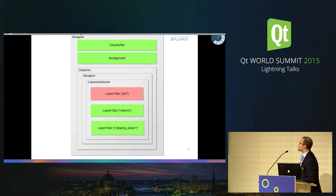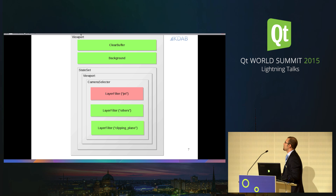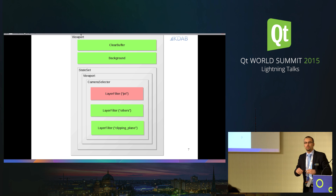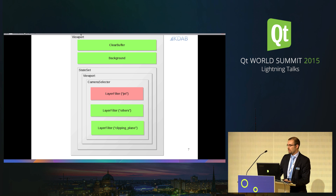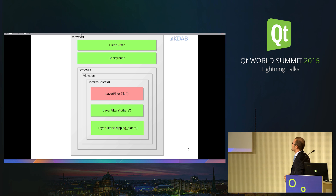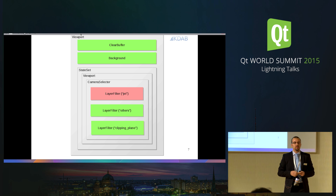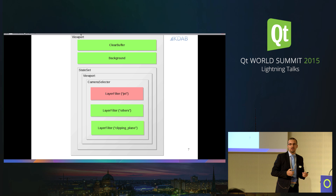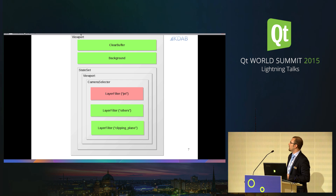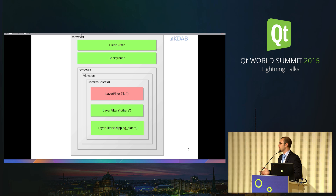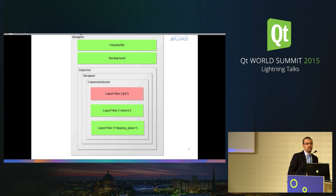We do that for each leaf node, and by just encapsulating a few nodes we can create a custom frame graph. The custom frame graph we've built for the demo basically does the following: we clear the buffers, draw the background, then draw the jet engine, draw other elements such as the engine stand, and finally draw the clipping planes.